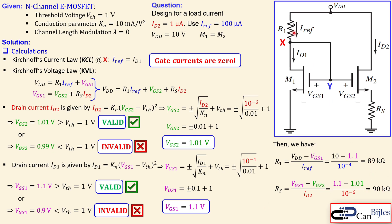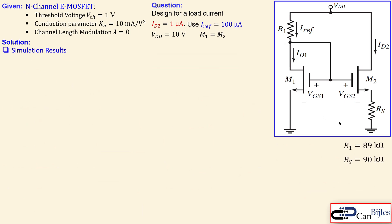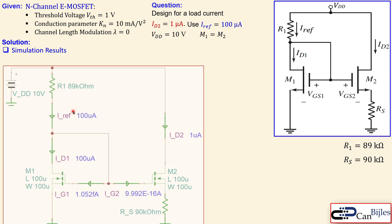So we get now our two resistors required for our design. Now design is now complete. Let's bring these R1 and also the RS here and now look at the simulation results and see if this is indeed correct or not.